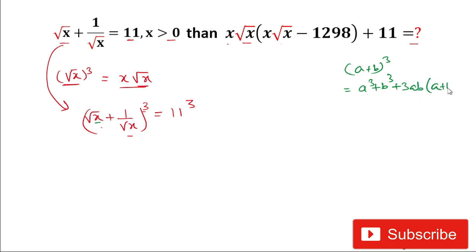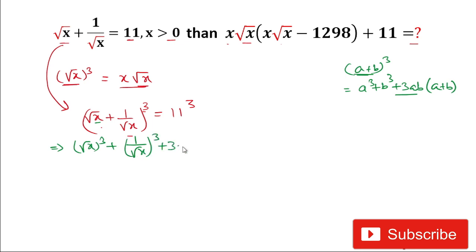Substituting: in place of a we write root(x), so [root(x)]³ + [1/root(x)]³ + 3·root(x)·(1/root(x))·[root(x) + 1/root(x)]. Everything is equal to 11³.